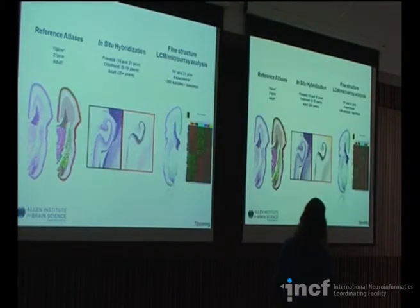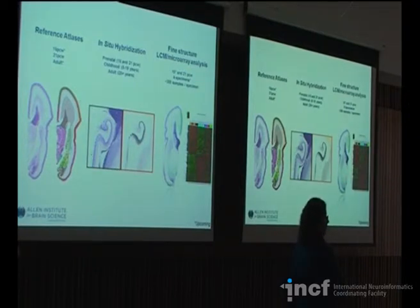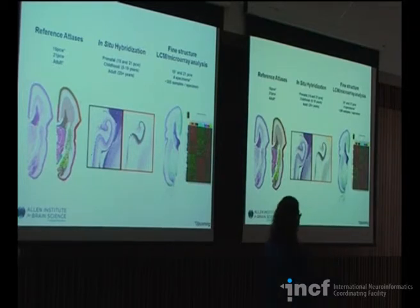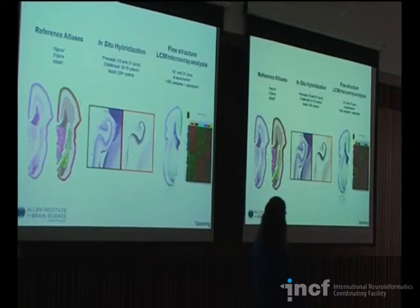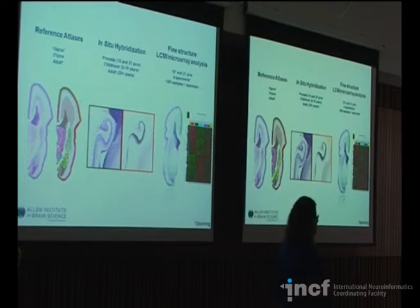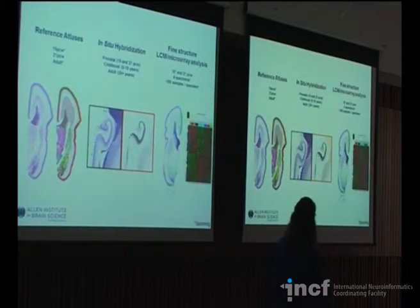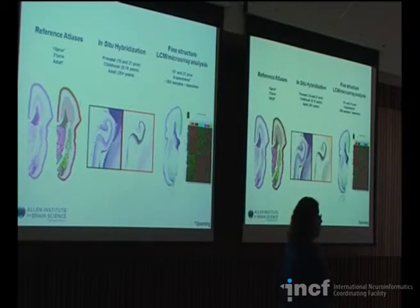This is an annotated prenatal human atlas. Right now, available online is 21 weeks post-conception. Coming up, there will be an atlas for 15 weeks post-conception as well as the adult. All of the ISH is in, so you can look at 15 and 20 weeks post-conception and also look at childhood or adulthood across a variety of structures.